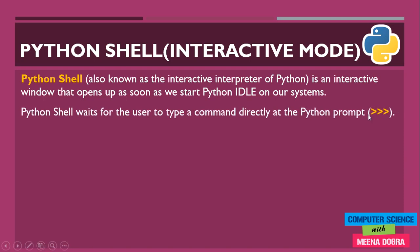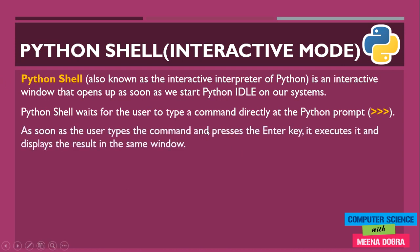The Python shell has a command prompt denoted by three greater-than symbols. At this command prompt, we are prompted to enter our commands. It waits for a user to enter a command or Python statement directly at the prompt. As soon as the user types the command and presses Enter, it gets executed by Python and the result is displayed in the same window immediately.